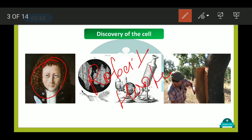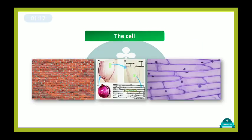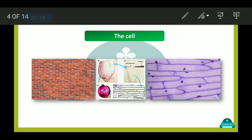The famous scientist named Robert Hooke discovered the cell for the first time. He discovered the cell in the bark of a tree, which is called cork — C-O-R-K. After his discovery, this field was further advanced.